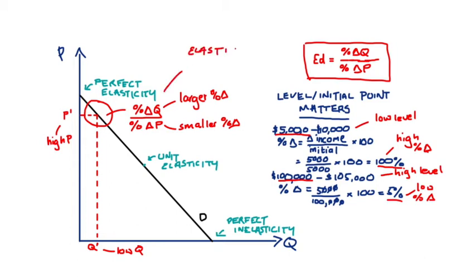The combination of large percentage changes in Q and small percentage changes in P gives us elasticity of demand values that are elastic in nature — price moves a little bit and demand moves proportionately more. The elasticity in absolute value is greater than one, since we're dividing a larger percentage change by a smaller one. If we include the negative sign, epsilon d will be less than negative one, which is our definition of elastic.